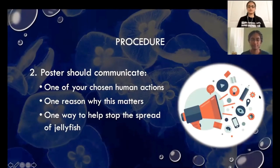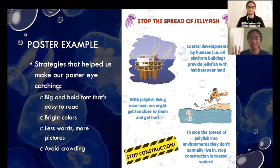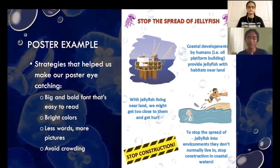Your poster should communicate one of your chosen human actions, one reason why this matters, and one way to help stop the spread of jellyfish. Here's an example of a poster we created in Microsoft Word — we made sure to include a human action, a reason why this matters, and a way to help stop the spread of jellyfish. Some strategies that helped us make our poster eye-catching included using big bold fonts that were easy to read, bright colors, more pictures, less words, and avoiding crowding, which is when pictures and words are too close together.